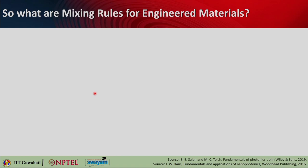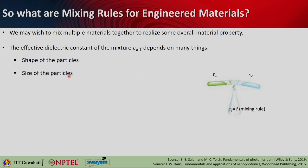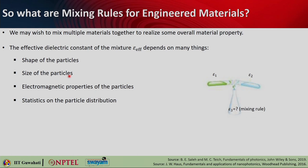What are the mixing rules for these mixtures or engineered materials? If you wish to mix multiple materials together to get some overall material property, there has to be some kind of guidance — some formula that relates the effective permittivity to the permittivity of the constituent materials. The effective dielectric constant of the mixture, epsilon effective, depends on the shape of the materials, the size of the particles, electromagnetic properties of the particles, statistics of the particle distribution, and the volume fraction of the constituent materials.